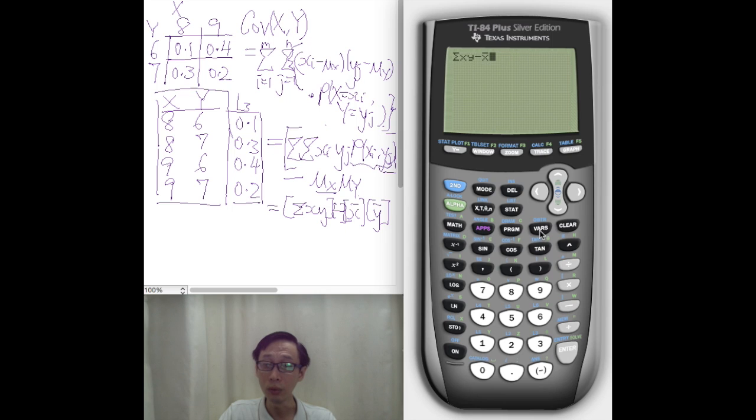2 and then 5. And that's it. So, this is the population covariance of the joint distribution. Negative 0.1 from GC.